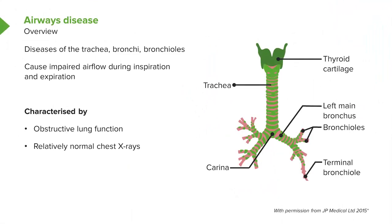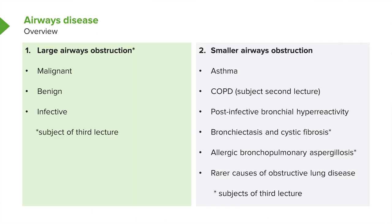Airways diseases don't tend to show many abnormalities on a chest x-ray, because the bronchi are not readily detectable on an x-ray, and the changes we're talking about are relatively small changes in multiple different parts of the airways, rather than a single mass lesion as you might have with a cancer, for example. There are a range of potential airways diseases; however, this subject is dominated by two: asthma and chronic obstructive pulmonary disease — COPD.